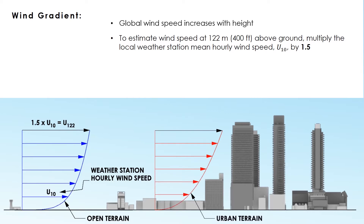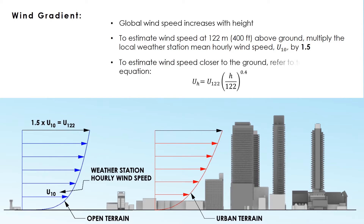To estimate the wind speed closer to the ground, a calculation using the 122 meter wind speed as a reference can be used if needed. Alternatively, for a quick guide, a height-to-wind-speed ratio table will be provided at the end of this video.